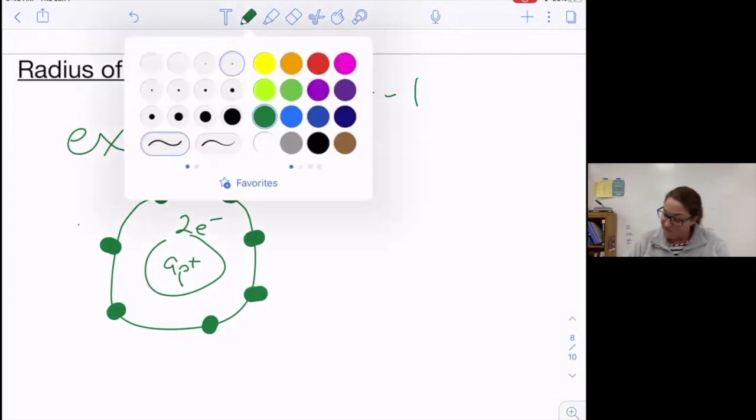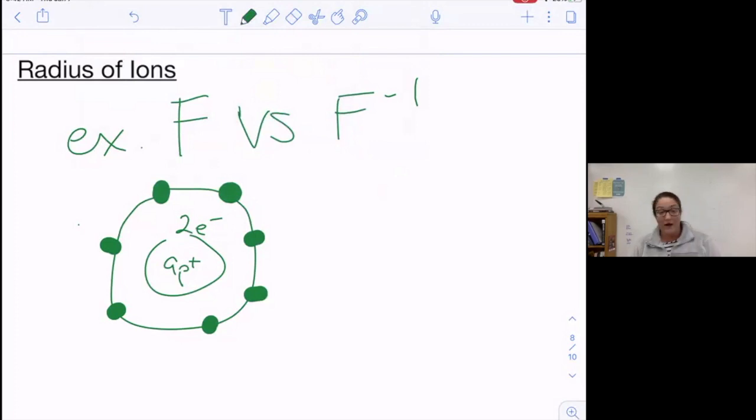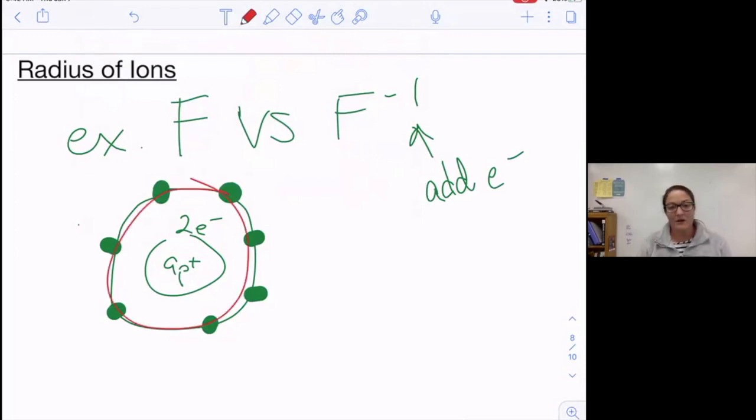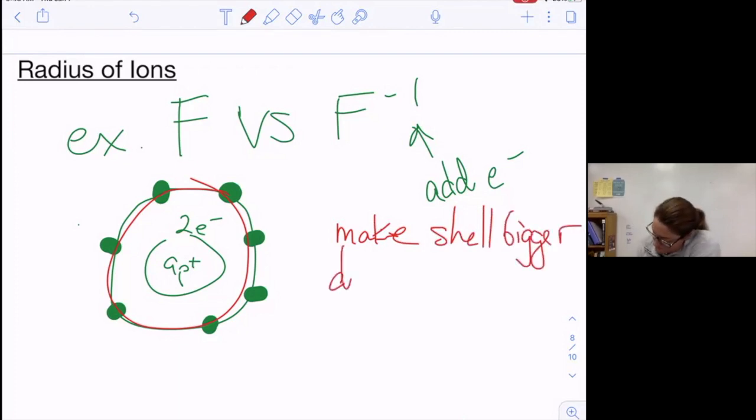How is this going to change when I change to F minus one? With F minus one, we're going to have to add an electron. Where am I going to add that electron? I'm going to add that electron to this outer shell. So electrons repel one another, which means if I want to jam another electron in there, it's going to push all of them out a little bit more, making that shell just a little bit bigger. So when we add an electron, it's going to make the shell just a little bit bigger because it needs to accommodate more electrons, and that's because the electrons repel one another.